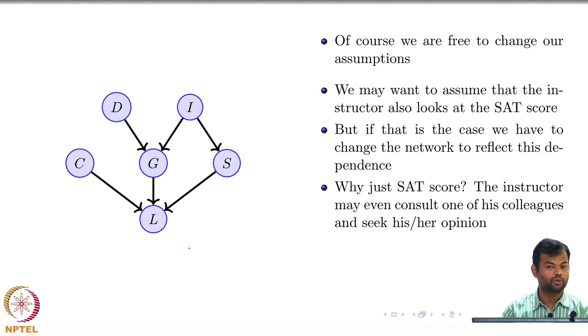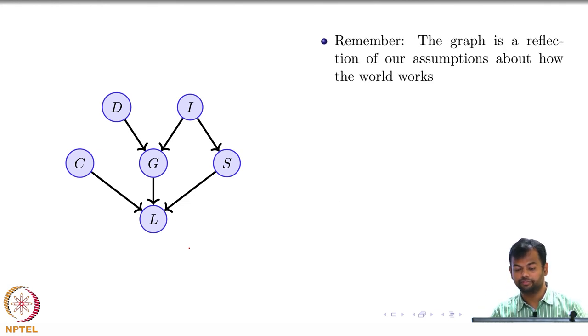Once you tell me that L does not depend on S directly, and then you ask me these what-if questions, it does not work that way. You have to make a modeling assumption. You are free to make whatever modeling assumptions you want. Once you make that, you freeze the network and then do the analysis on top of that. Why this SAT score? You could have also told me that the instructor may consult one of his colleagues. The instructor might feel that this person has done a project with that colleague. It does not end anywhere. You could introduce as many random variables as you want. What if the instructor was in a bad mood? I will also add a random variable for mood.